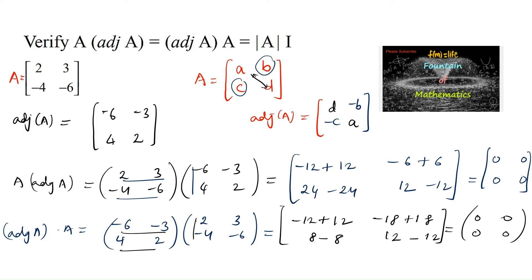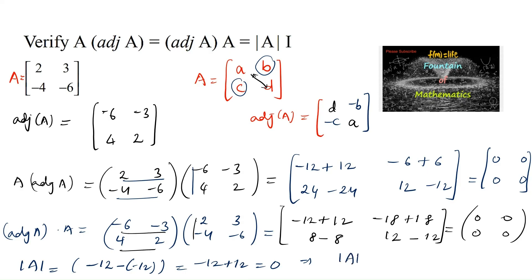Now finding the determinant of matrix A: det(A) = ad - bc = 2×(-6) - ((-4)×3) = -12 - (-12) = -12 + 12 = 0. Therefore det(A)×I = 0×[[1, 0], [0, 1]], which is also the zero matrix.